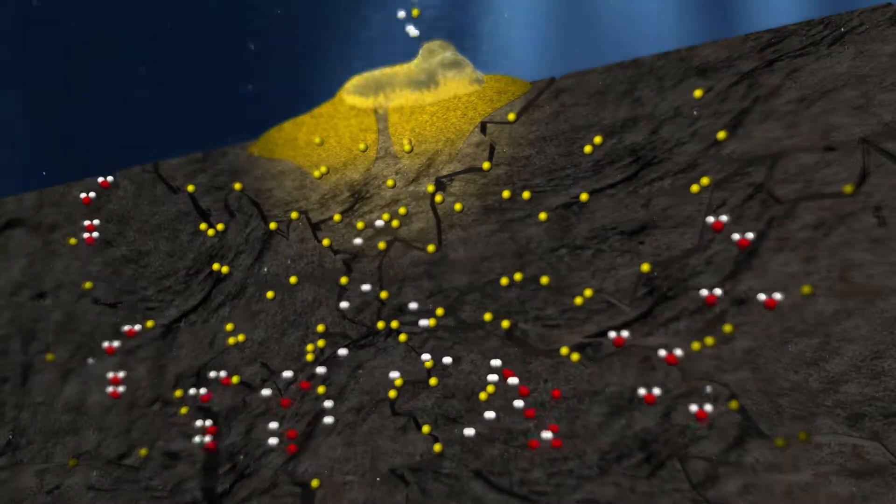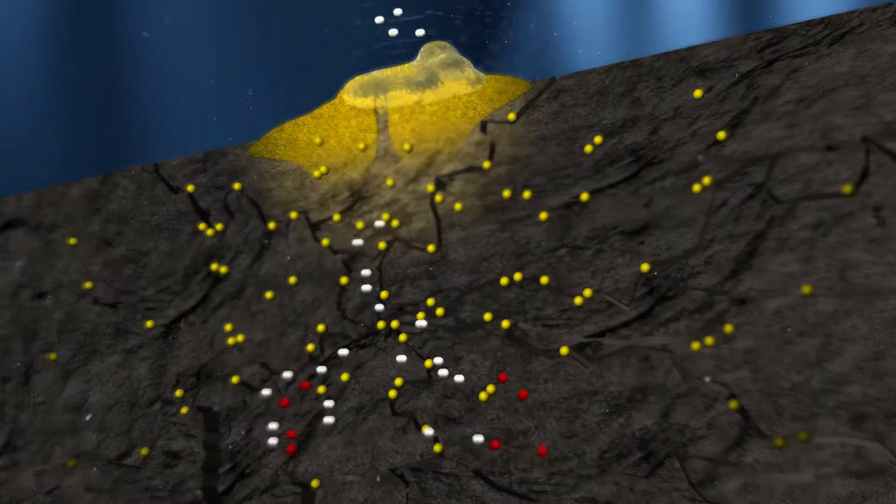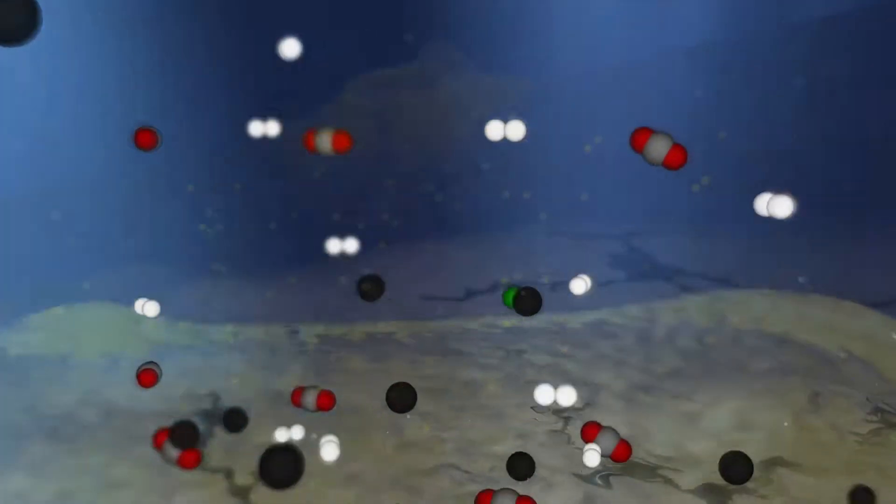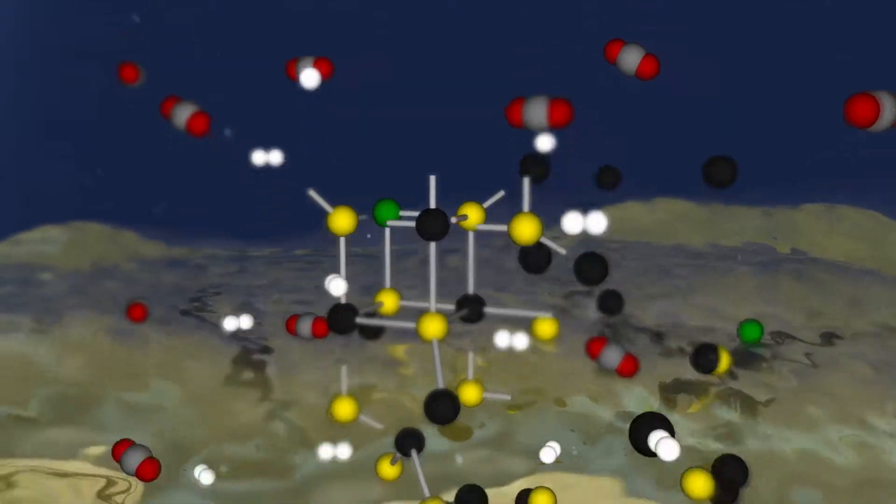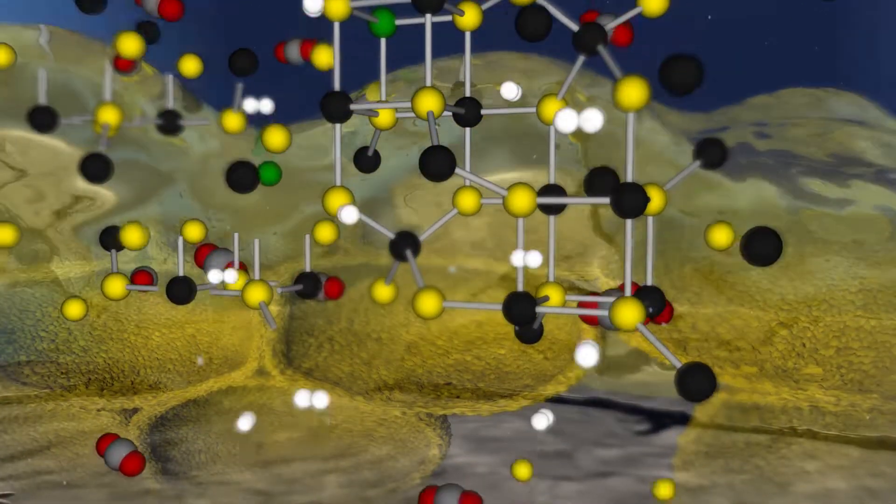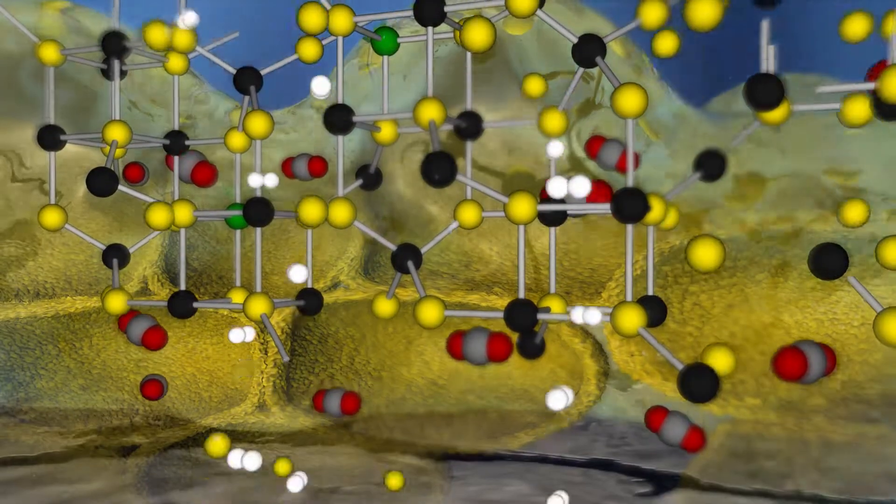At the vent-ocean interface, sulphur precipitates iron 2+, shown in black, and nickel, shown in green, to generate transition metal sulphides, which serve two important functions: catalysis and compartmentalisation.